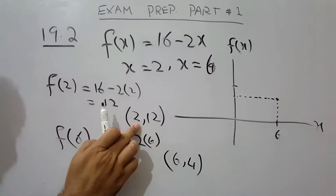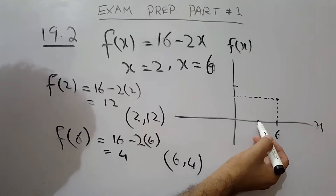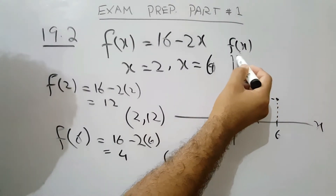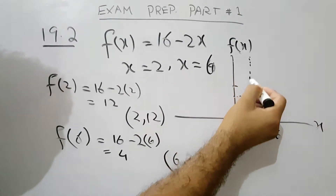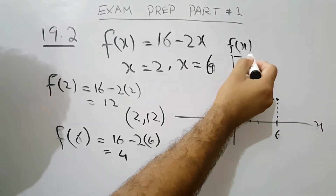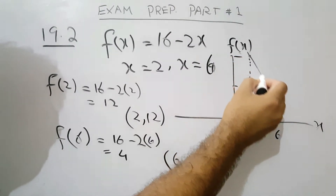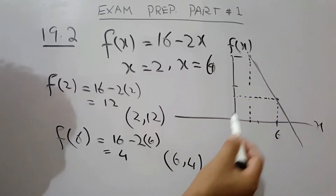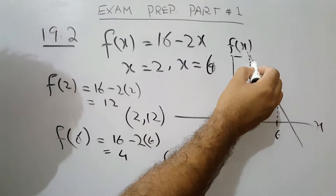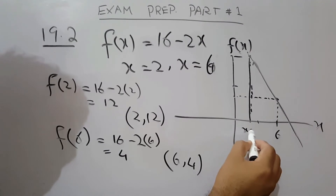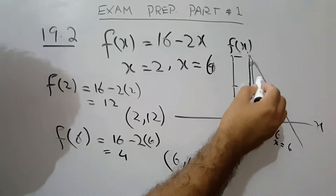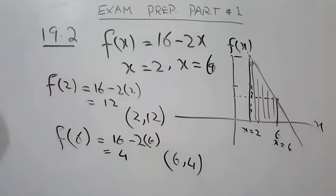If x is 2, then y is 12. If x is 6, then y is 4. We plot these points to sketch the region. This region represents the area under the curve, which is equal to the integral using the area under the curve formula.